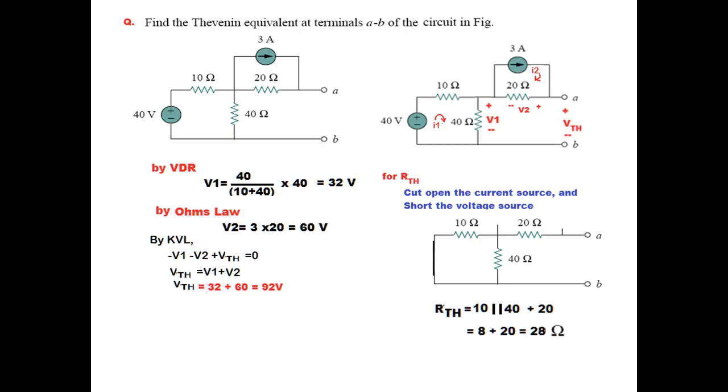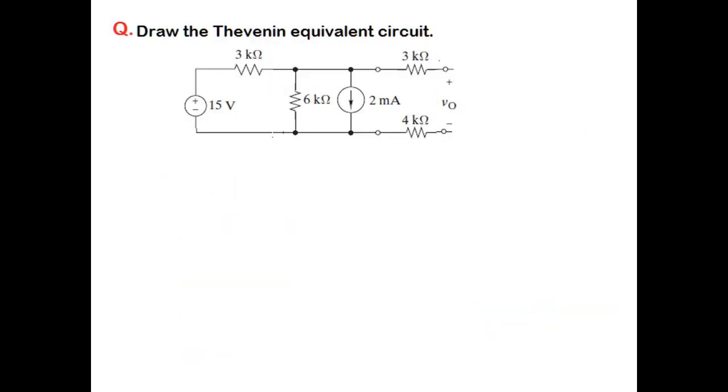So the equivalent circuit now can be drawn as 92 volts in series with 28 ohm resistance. Another example: in this example we need to find the output voltage VO by Thevenin's method.